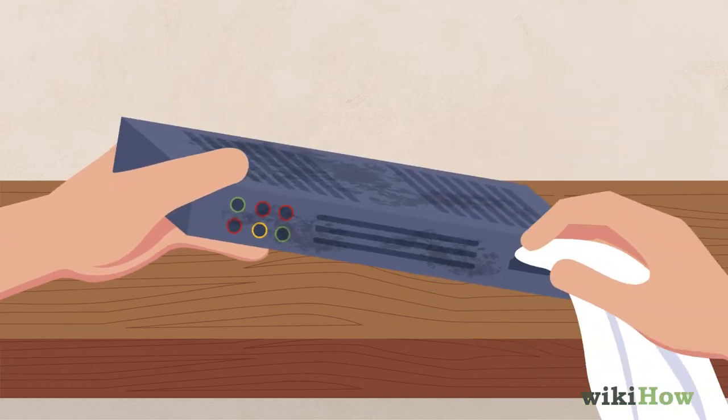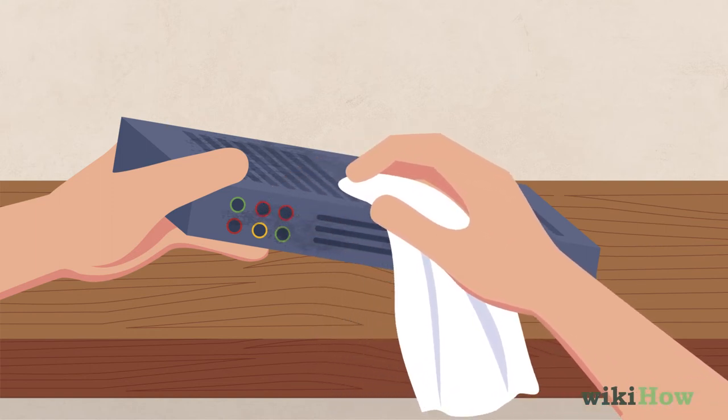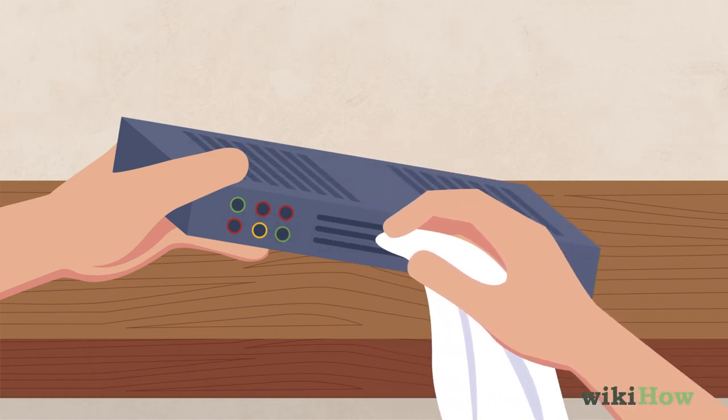Instead, use a soft, dry cloth to wipe around the cable ports, vents, or any other areas on the back or bottom of the DVD player where you notice a buildup of dust.